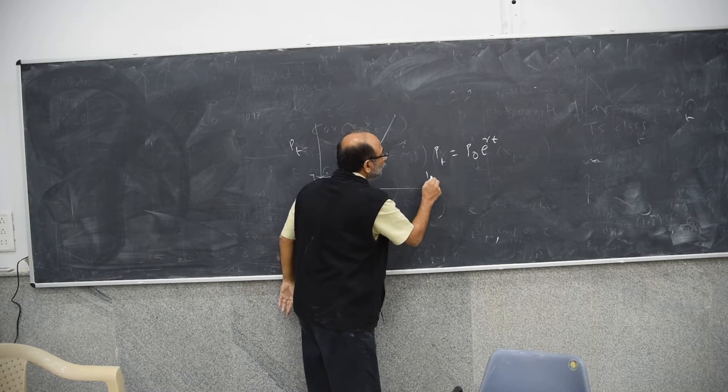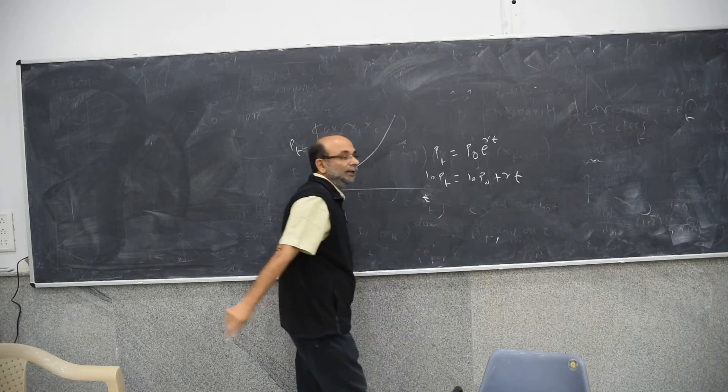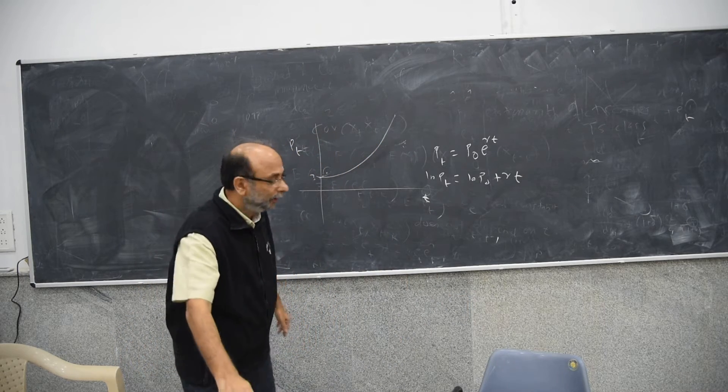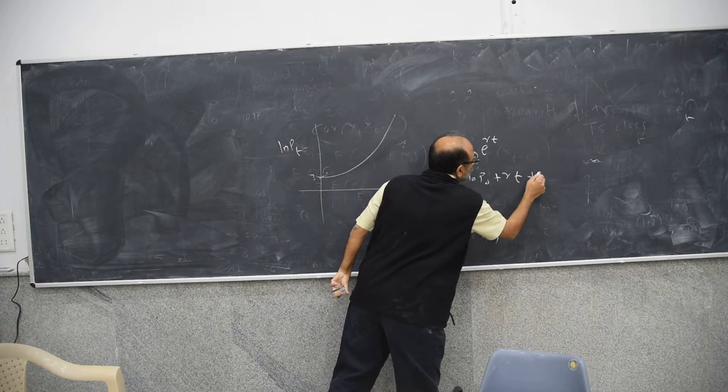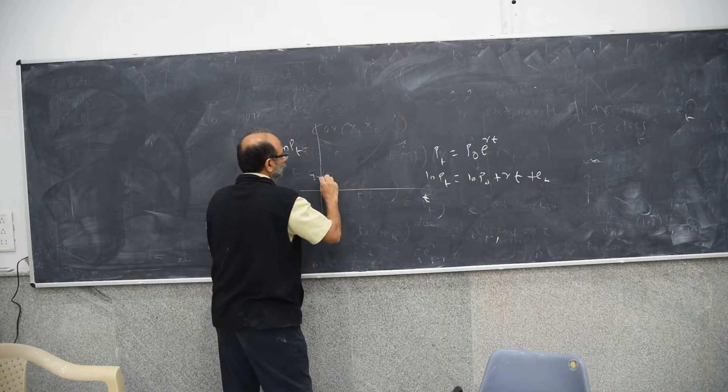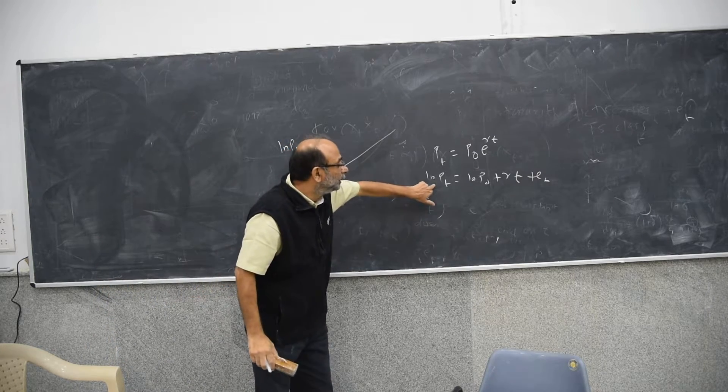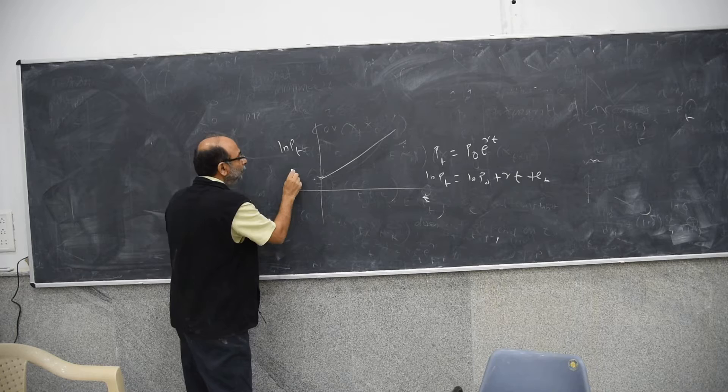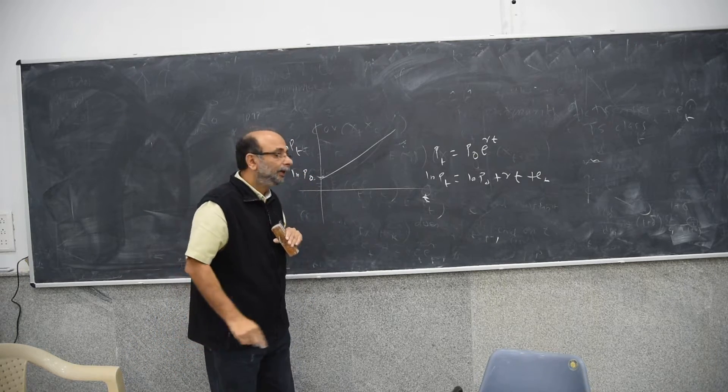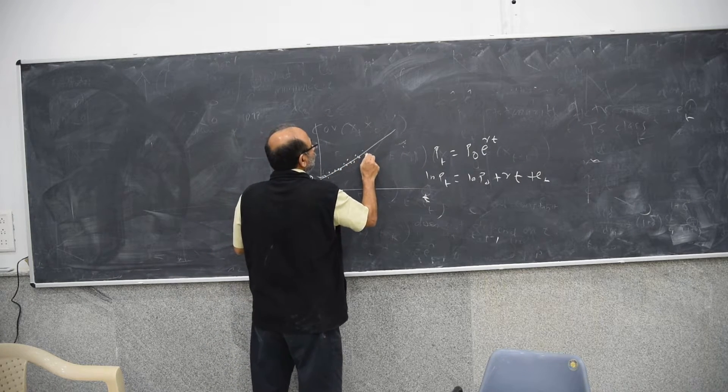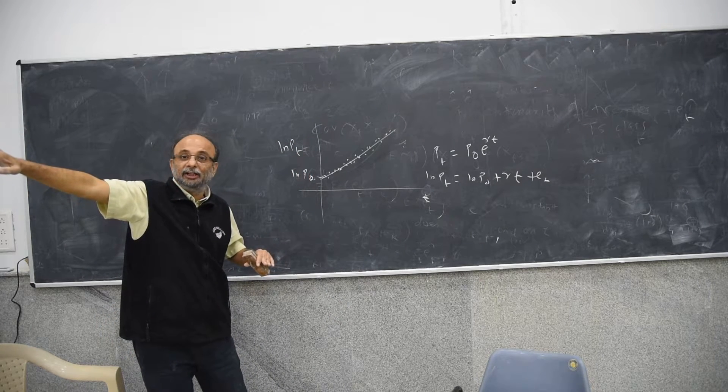But if you take the natural log on both sides, then you get log of P0 plus rt. So instead of putting Pt here, if you put log of Pt here, and if you put ln P here, then this same phenomenon can be written as a straight line, because now it's a linear relationship. Except that this point will become log of P0, and the data would be, your Pt will be not exactly like this, but around this. So if you take the trend out, again you will get trend stationary, again you will get a stationary time series.